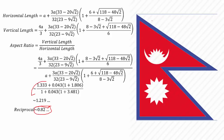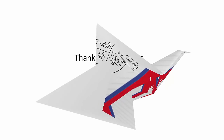What this means is: if the width of the flag is 1, then the height will be approximately 1.219. This is all about the aspect ratio. In the next video, we'll learn how to find the area of the flag, and it's quite interesting that the area has some interesting properties. Thanks for watching.